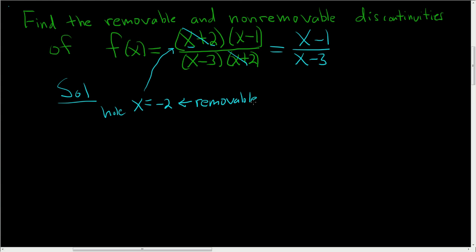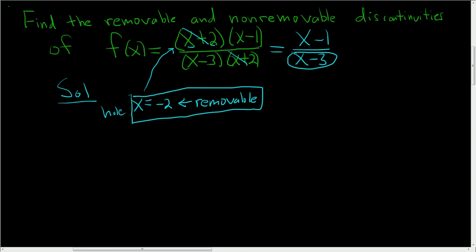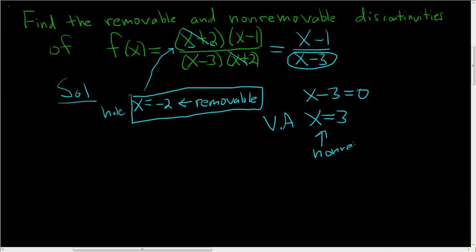You need to be careful because there are other types of holes that are not removable. To find the non-removable discontinuity, we look here. The function is undefined when you plug in 3. You take x minus 3, set it equal to 0, and you get x equals 3. This is the vertical asymptote, and vertical asymptotes are always non-removable.